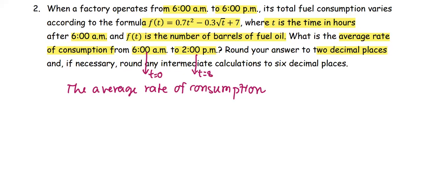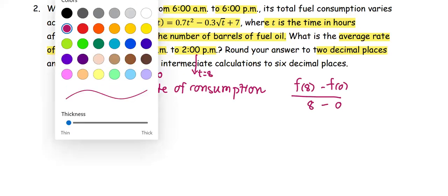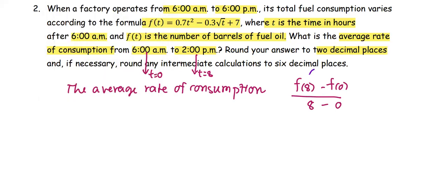Therefore, the average rate of consumption can be put together as the function at 8 minus the function at 0 divided by 8 minus 0. This represents consumption at 2 p.m. minus consumption at 6 a.m.